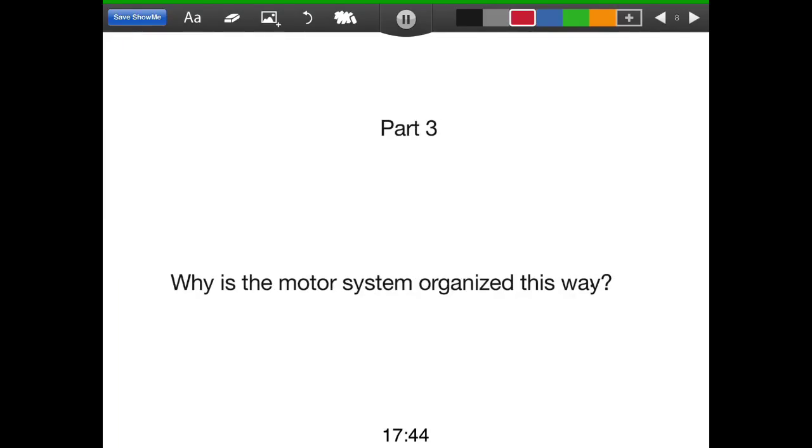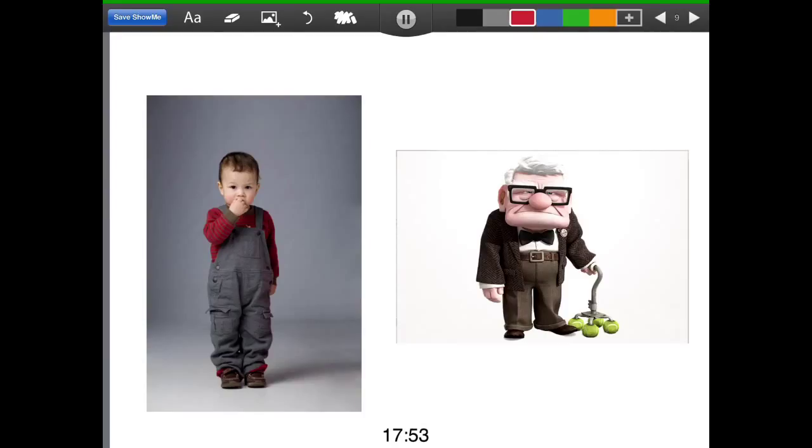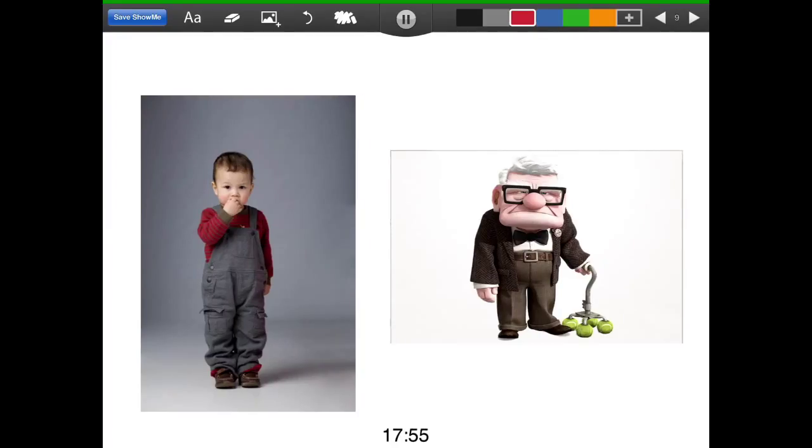Now we're going to look at the third part of our question about why the motor system is organized this way and what implications does this have on daily life. We can see from this picture, this comparison of a young little boy compared to this old man, Mr. Fredricksen from the movie Up—we can see that the boy is standing straight with great posture. And this is important because standing straight takes one signal, one original signal, to keep the muscles contracted.